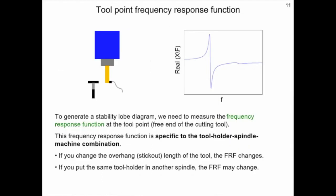As we mentioned before, in order to generate a stability lobe diagram, we need to measure the frequency response function at the tool point or the free end of the cutting tool. We perform this operation by exciting the tool with a small hammer, a modal hammer, and recording the response with a transducer such as an accelerometer. This measured frequency response function is specific to the tool, holder, spindle, machine combination selected for testing. It's important to note that if you change the overhang or stick out length of the tool, the frequency response function changes. Likewise, if you put the same tool holder combination in another spindle, the FRF may change if that spindle dynamics are not the same as the original spindle dynamics.